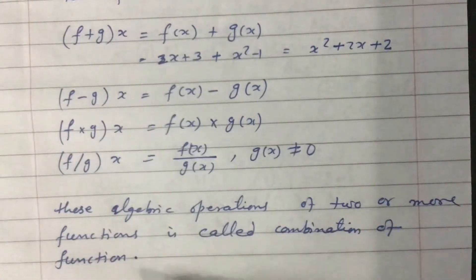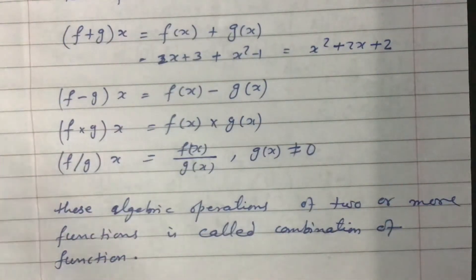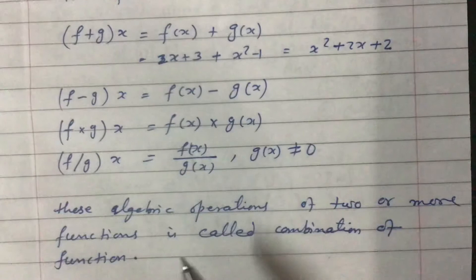Combination of function is totally different from composite function. In composite function, we will not combine. This is combination means operation of function, and composite is a different thing where I have already explained about composite function.